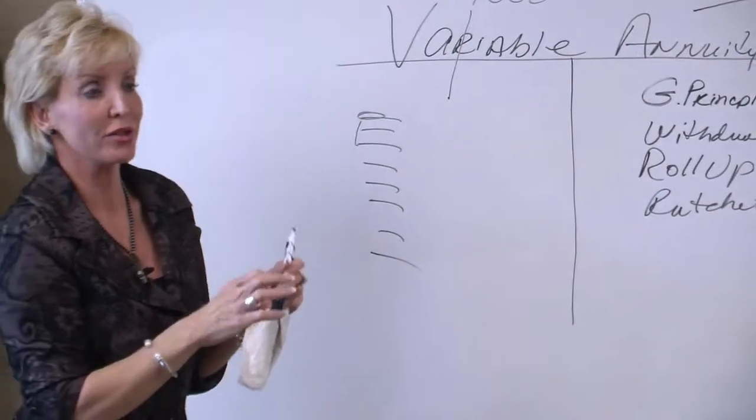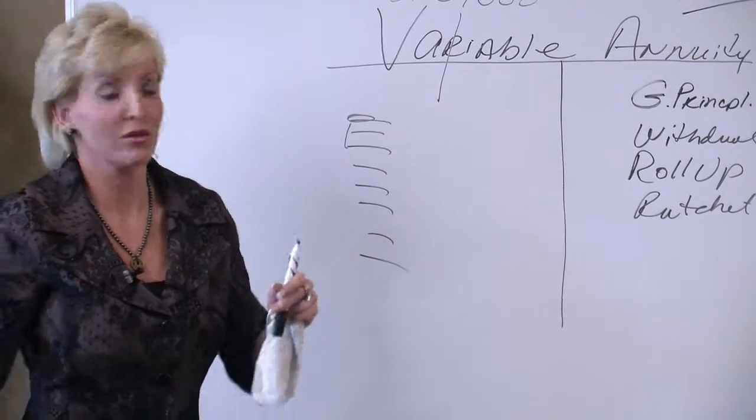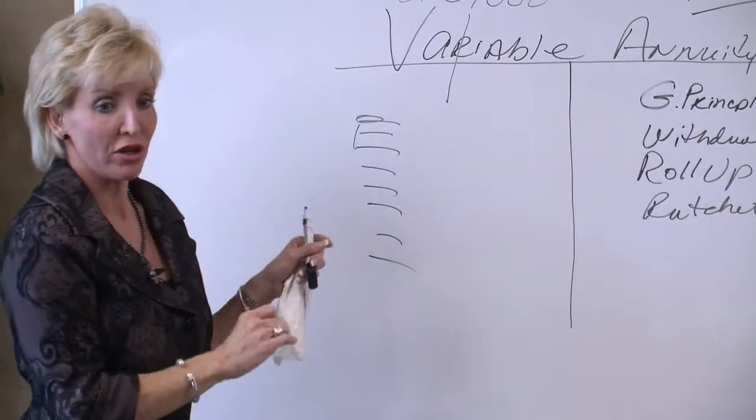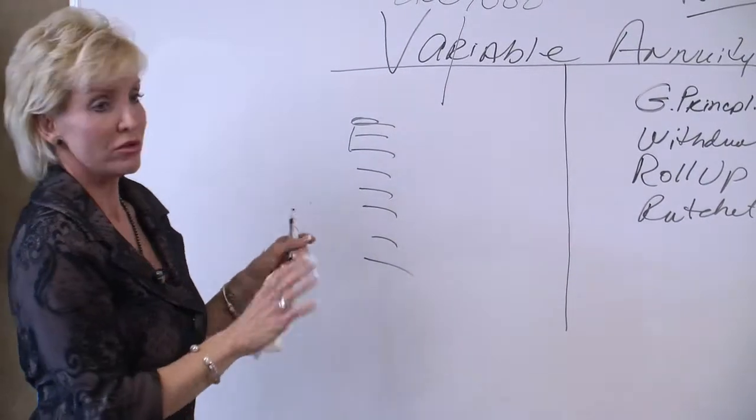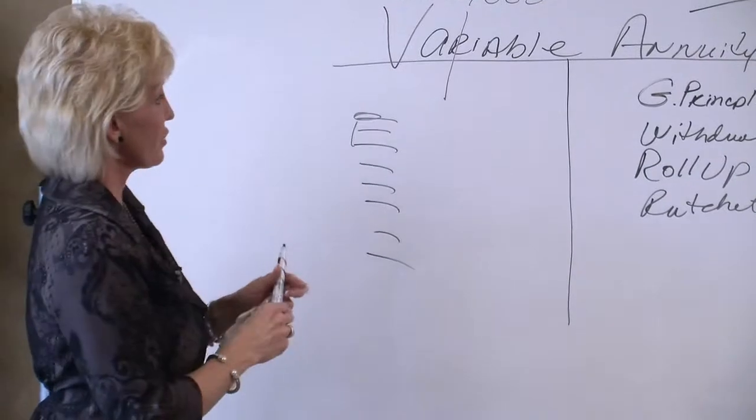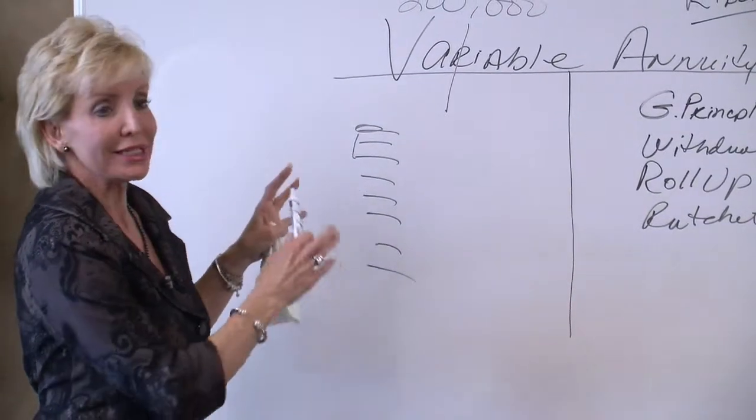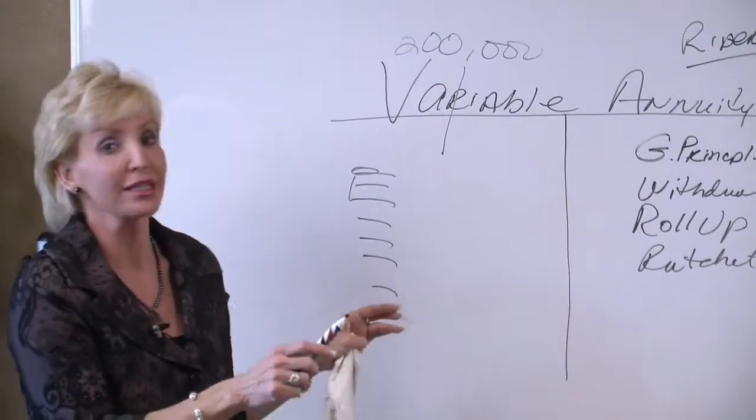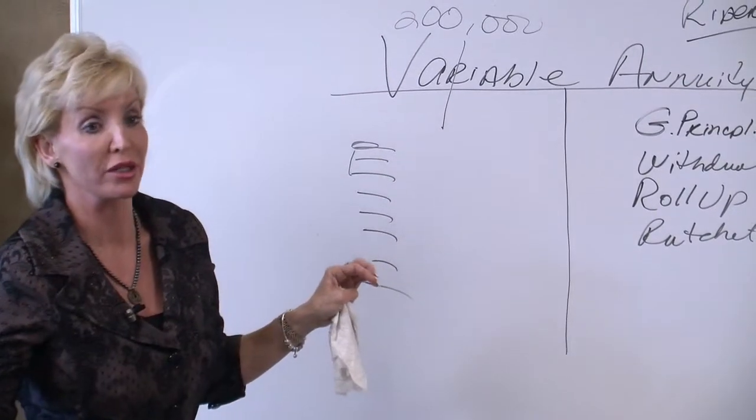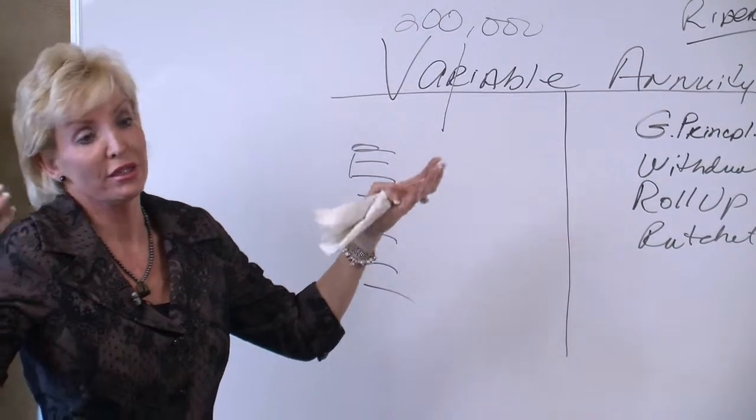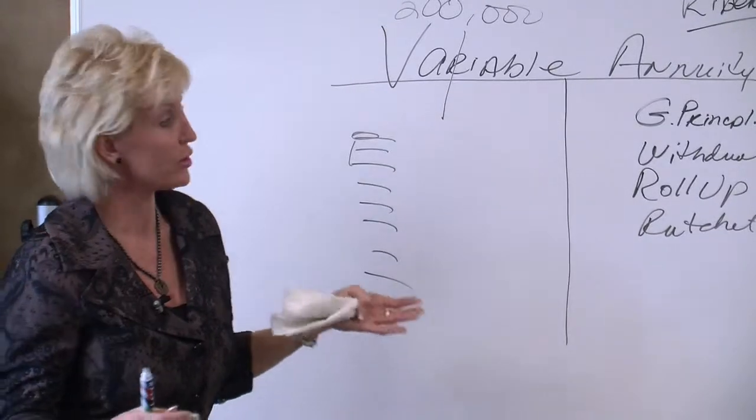The bottom line in a variable annuity, and I'll have to just tell you, these are very complicated accounts. They've been used for years and years. But your money is still in the market versus an indexed annuity. Your money is not in the market. It's just linked to the market. So if the market goes up, you do well, or you do okay, and the market goes down, you don't lose any money.